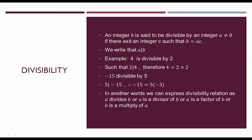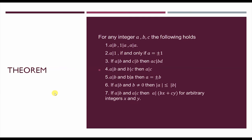Now we'll see a theorem on divisibility. For any integers a, b, c, the following conditions hold: (1) a divides a; (2) a divides 1 if and only if a = ±1; (3) if a divides b and c divides d, then ac divides bd; (4) if a divides b and b divides c, then a divides c; (5) if a divides b and b divides a, then a = ±b; (6) if a divides b and b ≠ 0, then |a| ≤ |b|; (7) if a divides b and a divides c, then a divides bx + cy for any integers x and y.